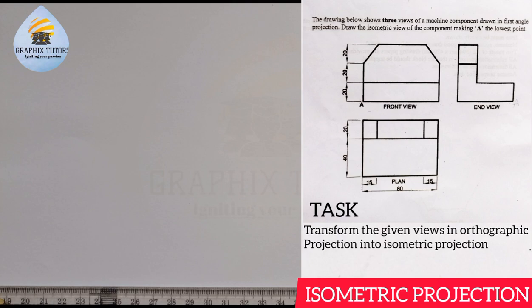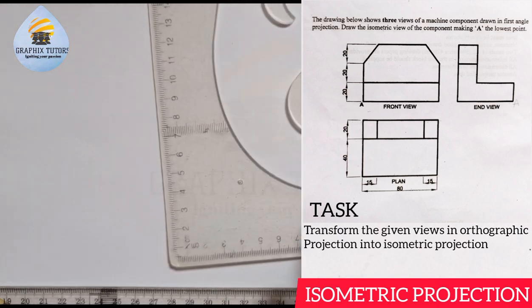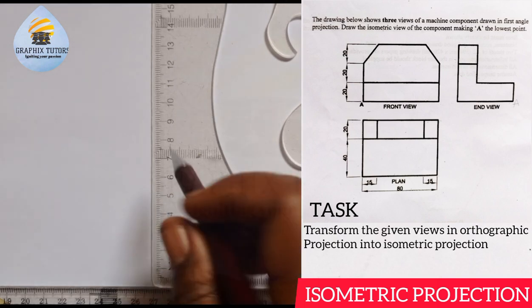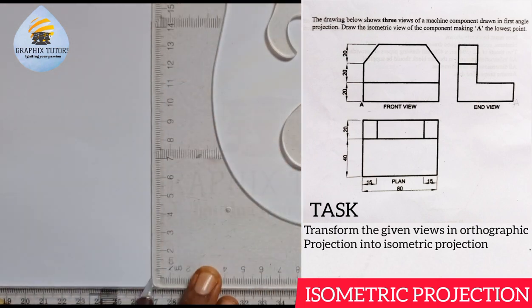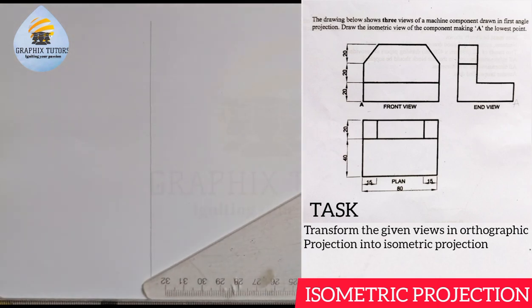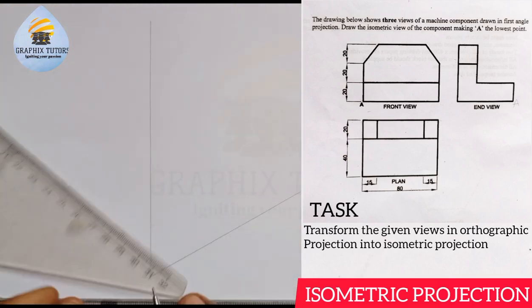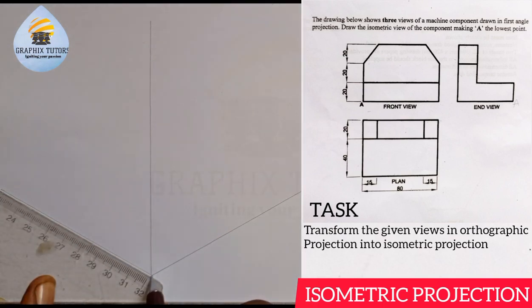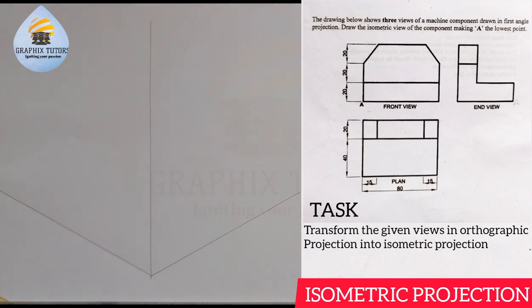We are told to draw an isometric view, so the first thing you should do is draw your isometric axes. Take your set square and draw the Y, the Z, and the X at an angle of 30 degrees, because we are using isometric projection.